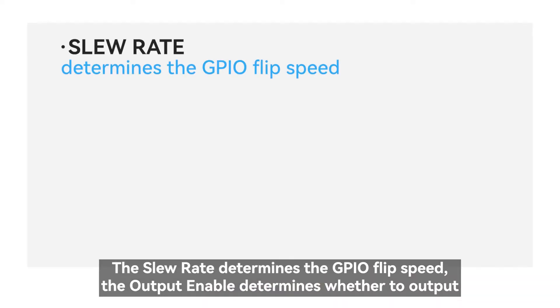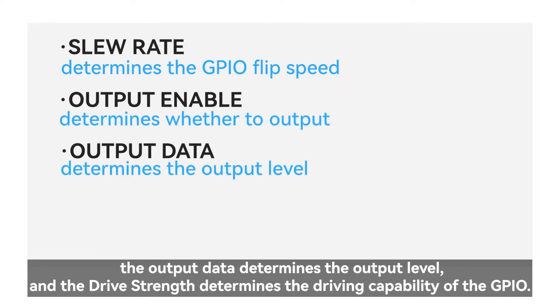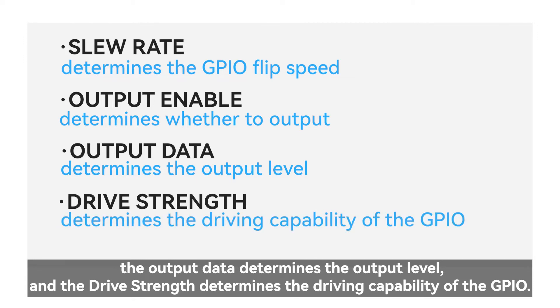The slew rate determines the GPIO flip speed. The output enable determines whether to output. The output data determines the output level, and the drive strength determines the driving capability of the GPIO.